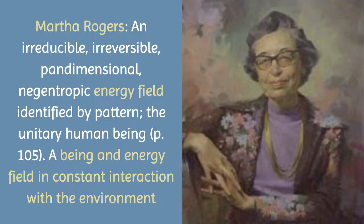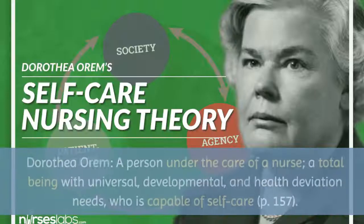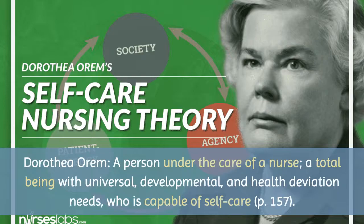Martha Rogers had a completely different take on person. She believed that a person was an energy field and defined person as an irreducible, irreversible, pandimensional, negantropic energy field identified by pattern — calling that the unitary human being. Her theory, the Theory of Unitary Humans, held that a person was a being and an energy field in constant interaction with the environment — giving her theory a physics dimension centered on energy fields and patterns.